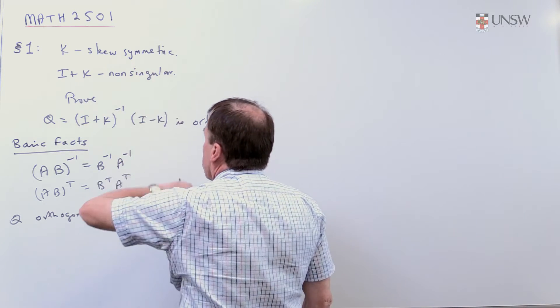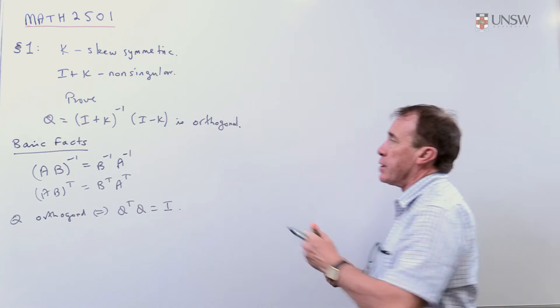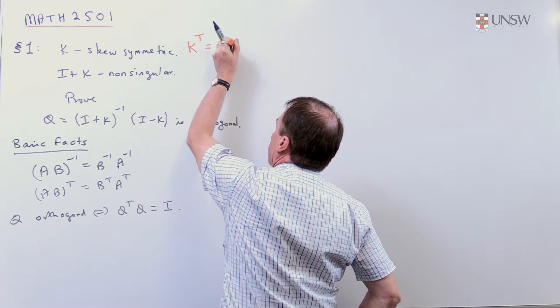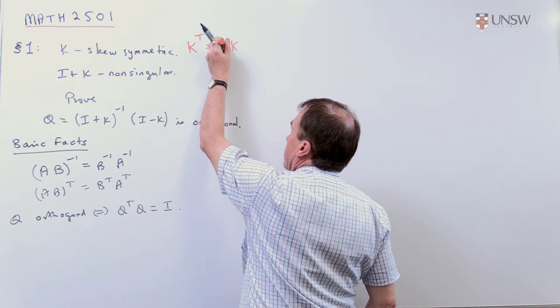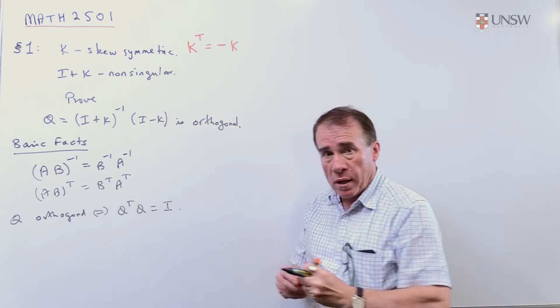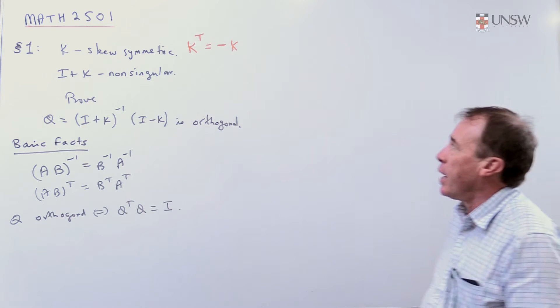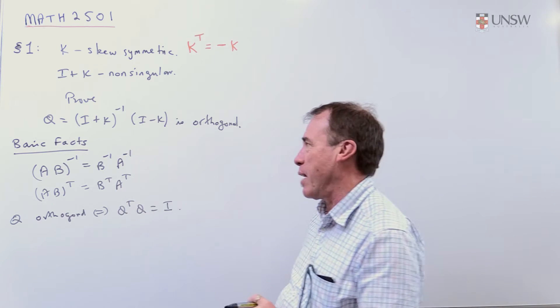Skew symmetric. Well, that's a technical word to be skew symmetric. To be symmetric means that when you take K transpose, you get K. And to be skew symmetric means that K transpose is minus K. You might like to have a think about skew symmetric matrices, in particular, have a think about what the diagonal entries of a skew symmetric matrix have to look like.